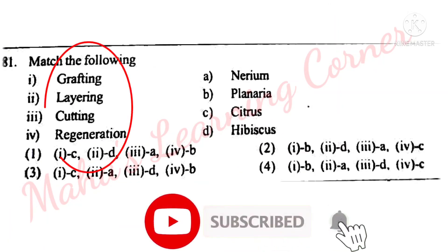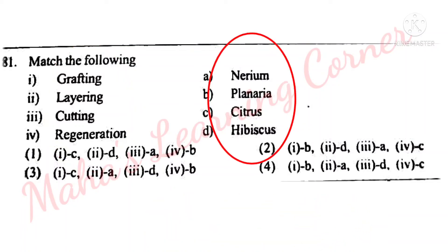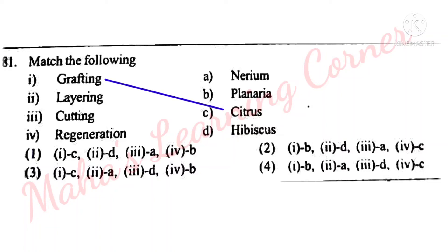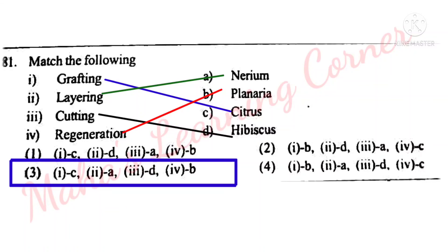Match the following reproductive methods with examples: Grafting, Layering, Cutting, Regeneration – matched with Nerium, Planaria, Citrus, Hibiscus. Grafting matches with Citrus; Layering matches with Nerium; Cutting matches with Hibiscus; Regeneration matches with Planaria. Option 3 is the correct answer: 1-C, 2-A, 3-D, 4-B.